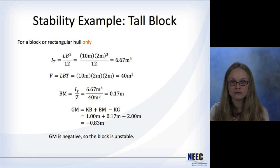So you can really see the difference on how the orientation of this block is going to affect BM here. So plug in those numbers for BM, we now get BM of 0.17 meters. This is a big difference than what we had before, and GM is now equal to minus 0.83 meters. So GM is negative, so the block is unstable, which we could have guessed.